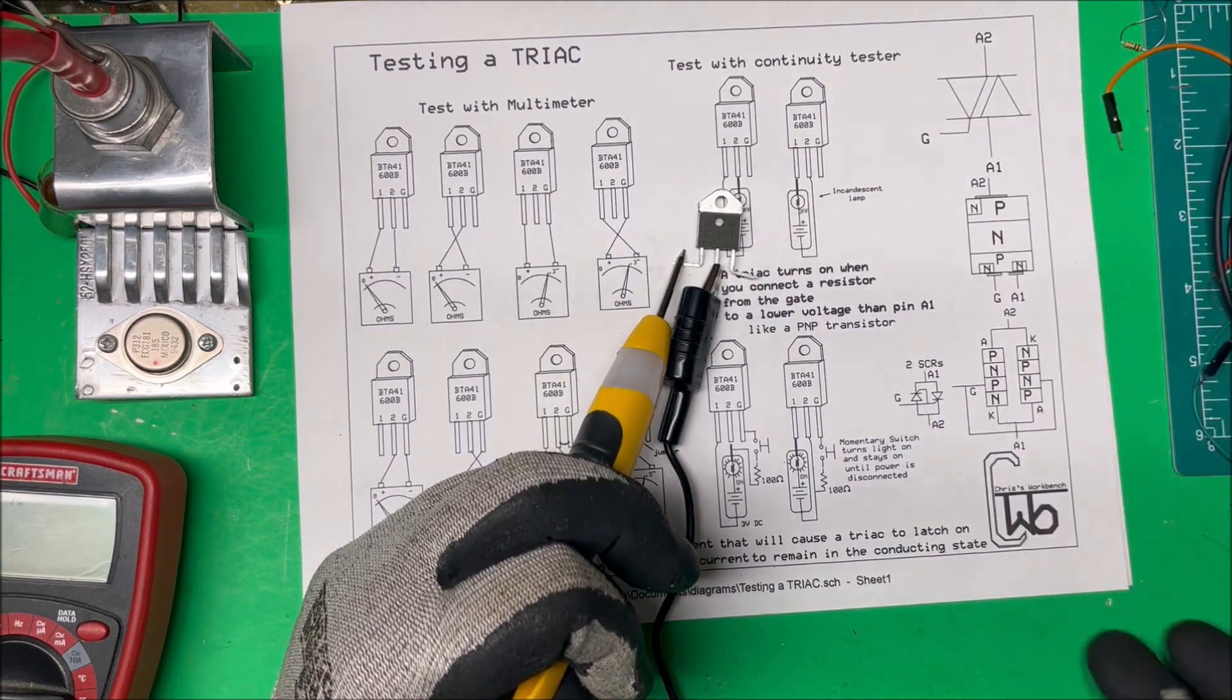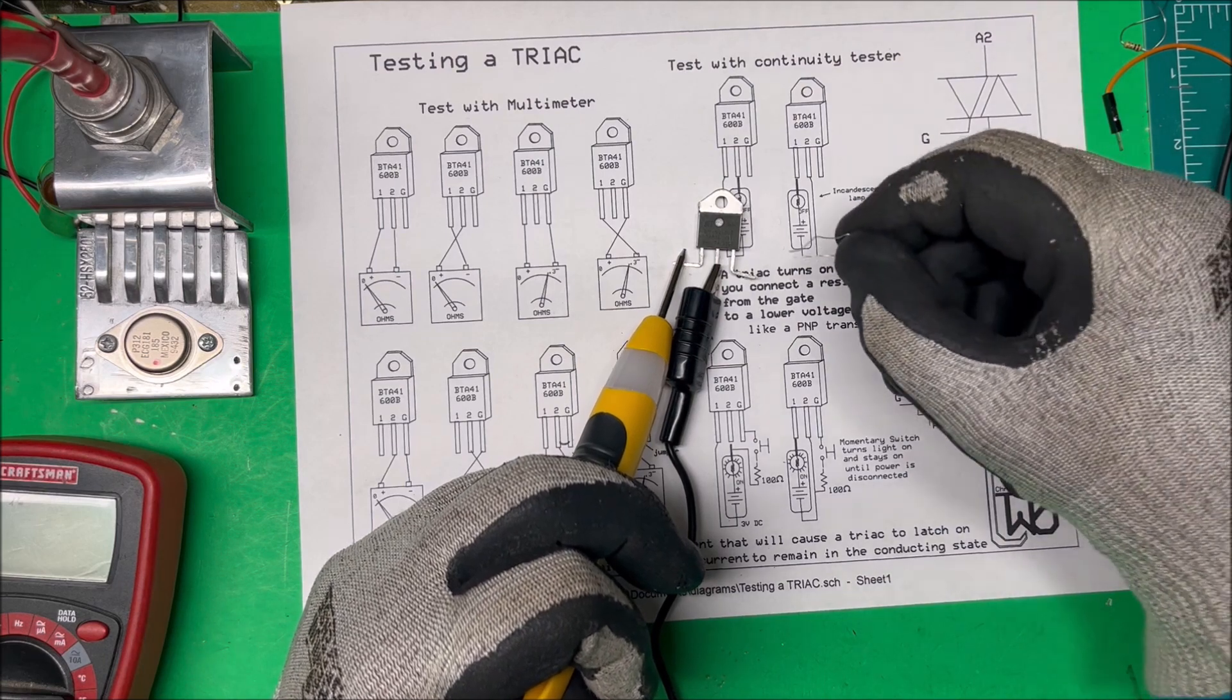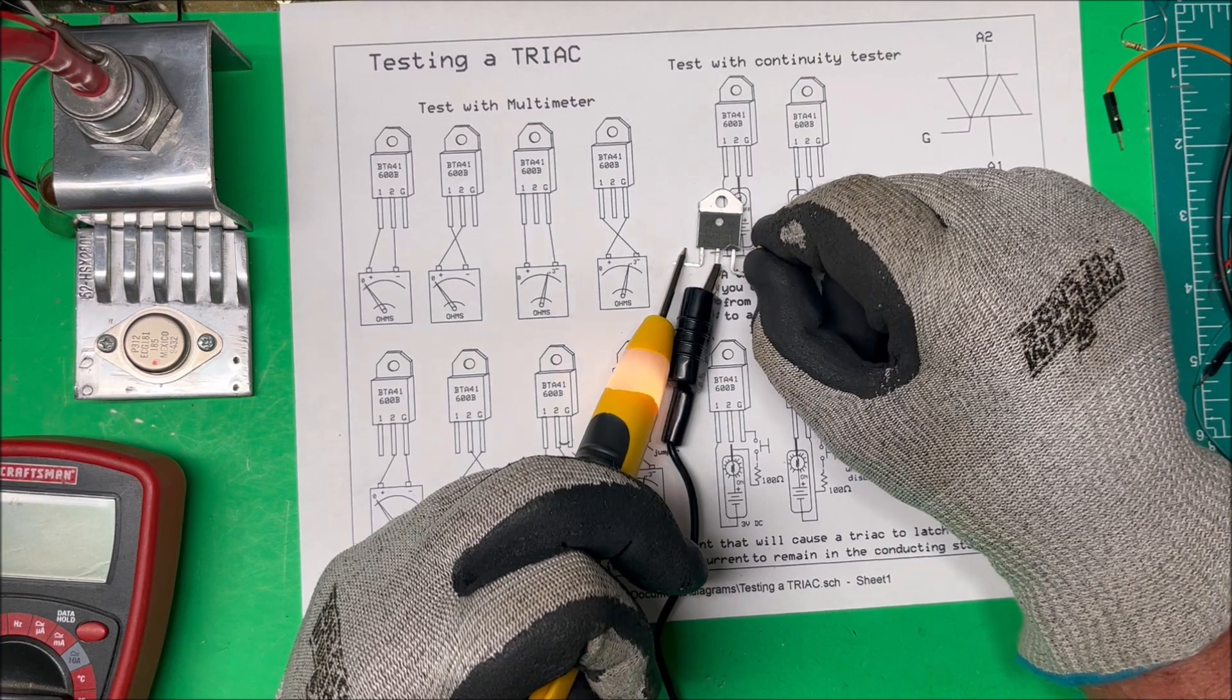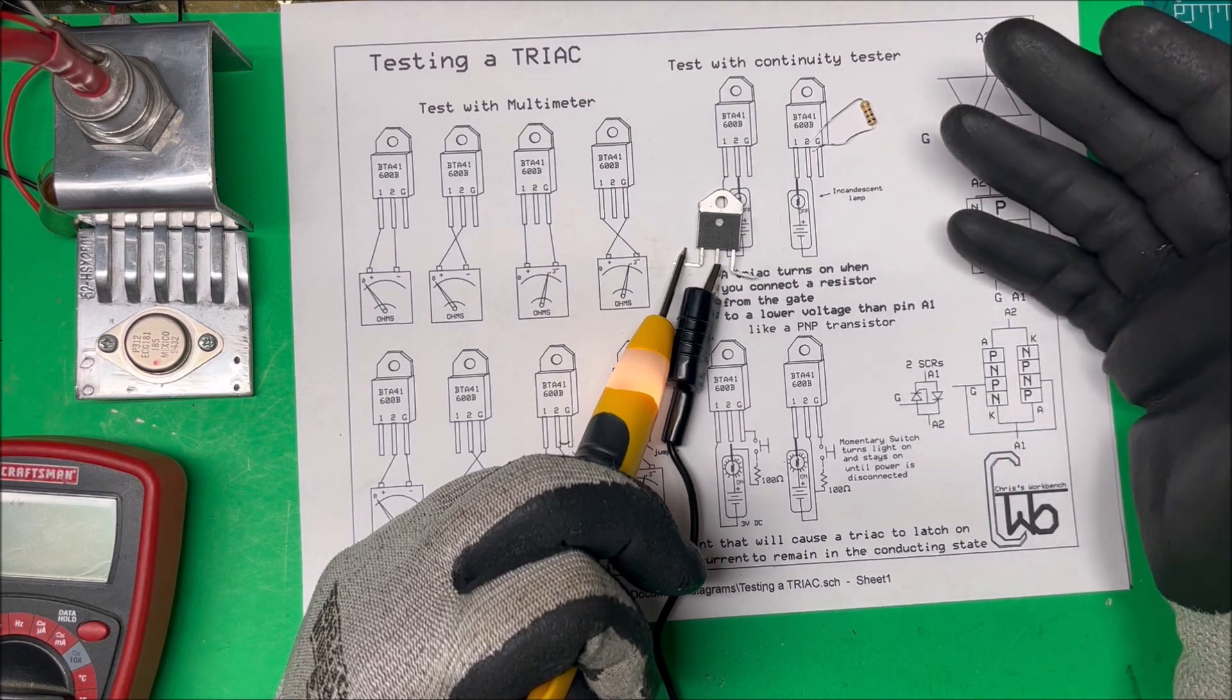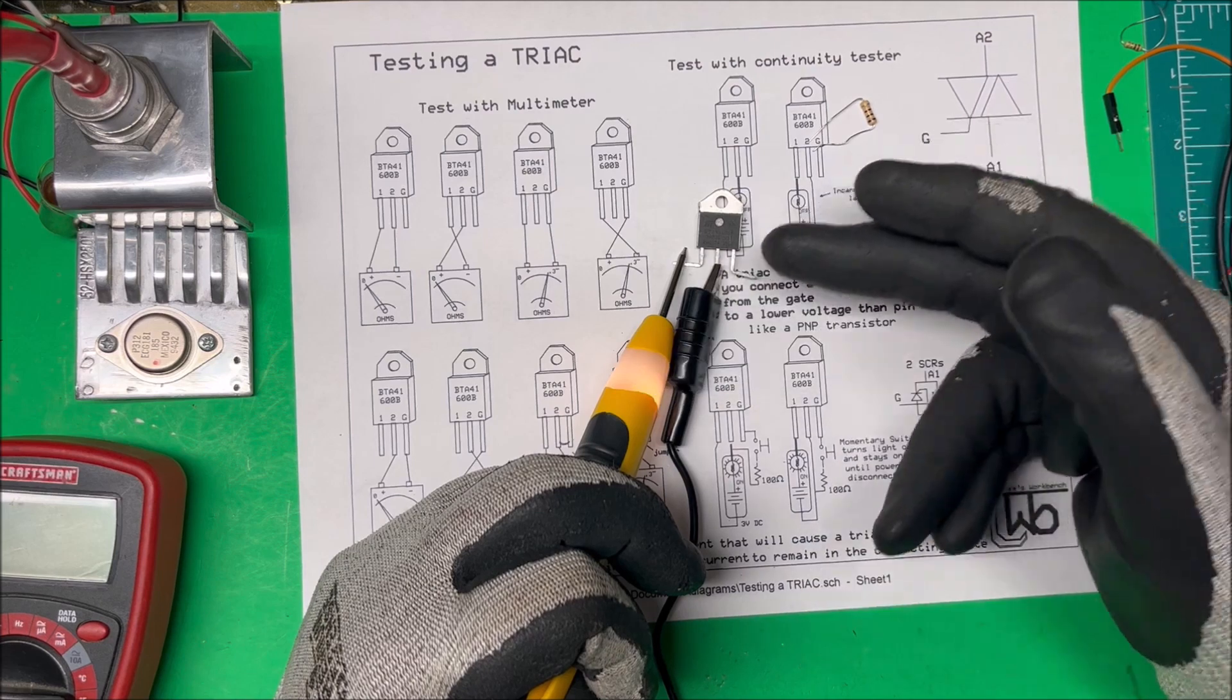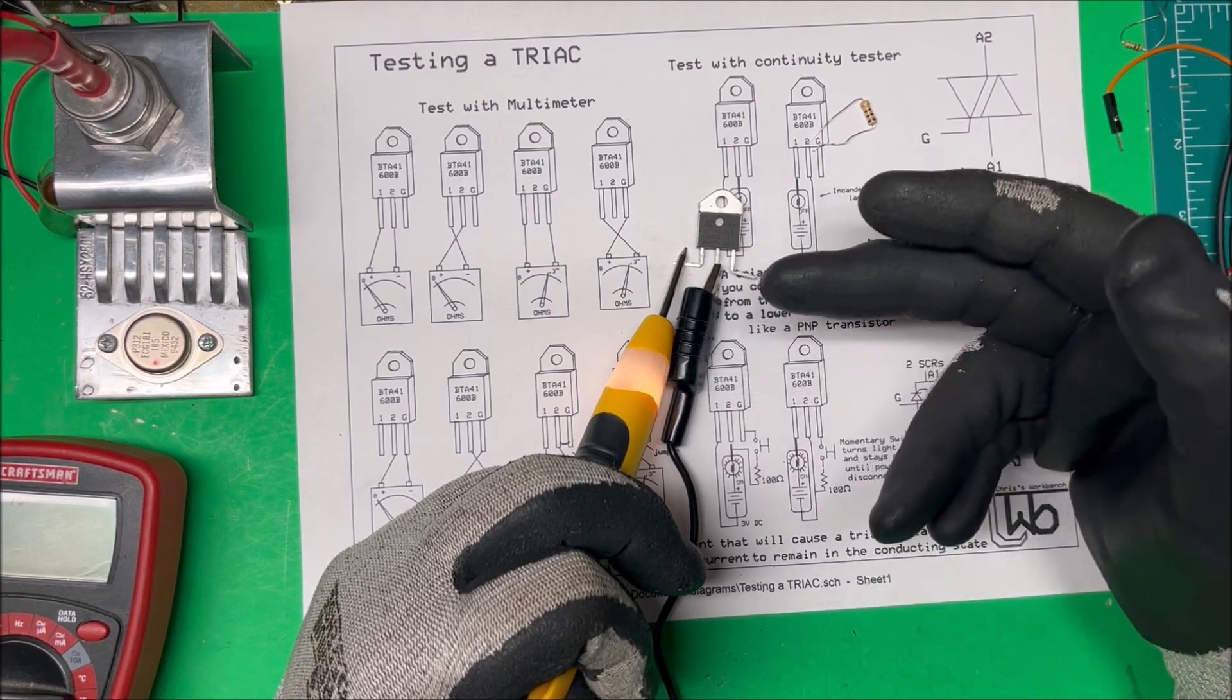And we use the 100-ohm resistor. There we go, the light's on, it latched in. We don't need the resistor on there anymore, so that's working fine. It's going to stay on as long as we've got power to it.